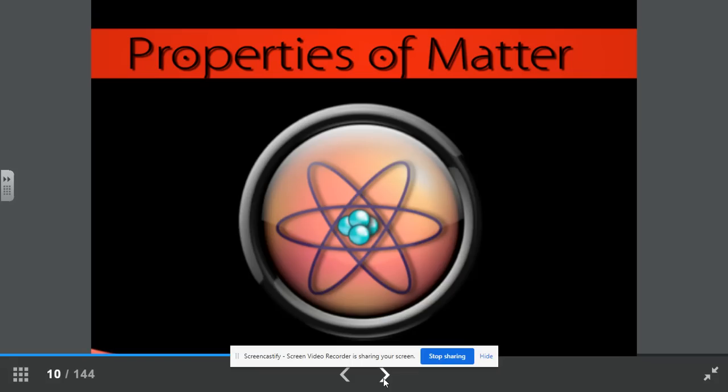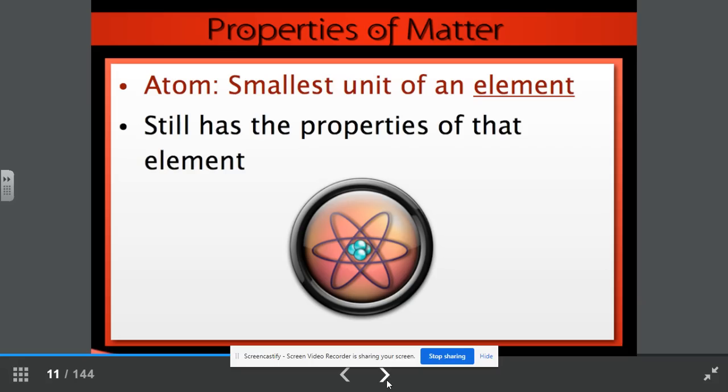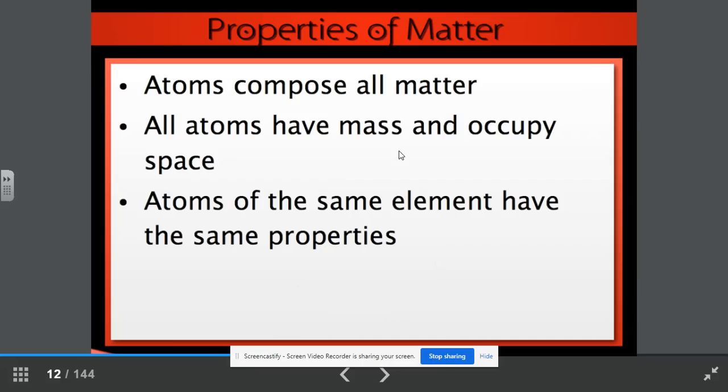Open up your notebook to page four, and we'll begin with properties of matter. We know the atom is the smallest unit of an element. It still has the properties of that element. All matter is composed of atoms. Atoms have mass and occupy space. Atoms of the same element have the same properties.